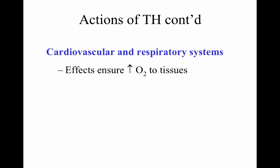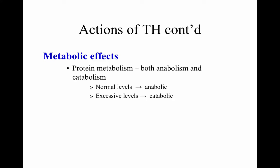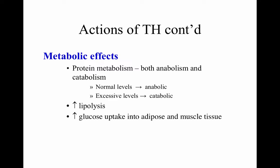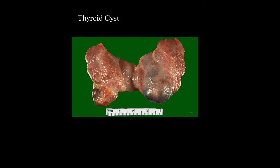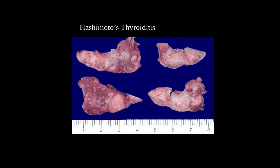Cardiovascular and respiratory effects ensure increased oxygen to tissues, increased heart activity, and increased ventilation rate. Metabolic effects include protein metabolism — both anabolic and catabolic: normal levels are anabolic, excessive levels are catabolic. Increased lipolysis breaks down fats, and glucose uptake is increased into adipose and muscle tissue. Glucose absorption by the small intestine and glucose catabolism are also increased. A thyroid cyst can produce swelling on the throat and may impact hormone production.